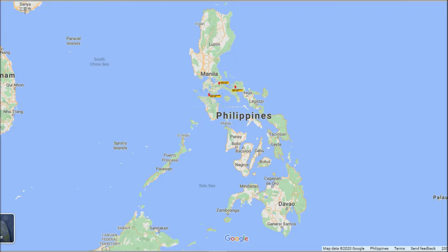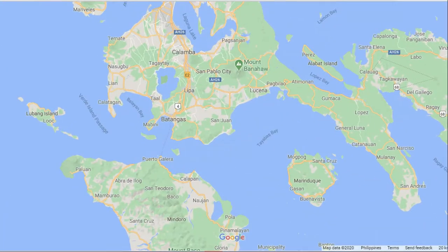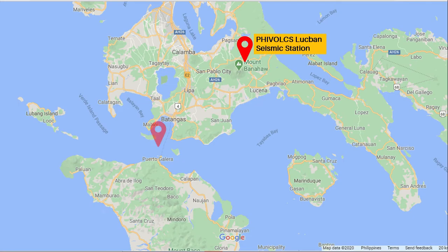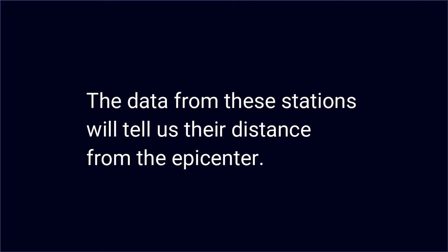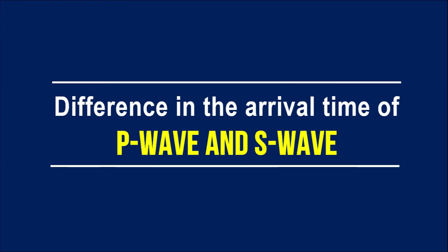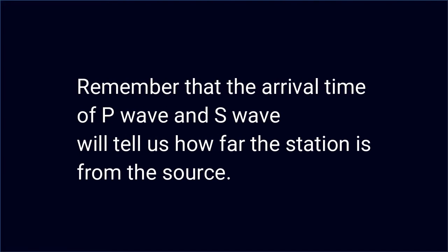Let's take the Philippines as an example. Zooming in on this part of the map, we can find the Feebox-Lukban Seismic Station, the Feebox-Puerto Galera Seismic Station, and the Feebox-Ginayangan Seismic Station. The data from these stations will tell us their distance from the epicenter. This is done through identifying the difference in the arrival time of P-Wave and S-Wave as recorded in their seismograph.